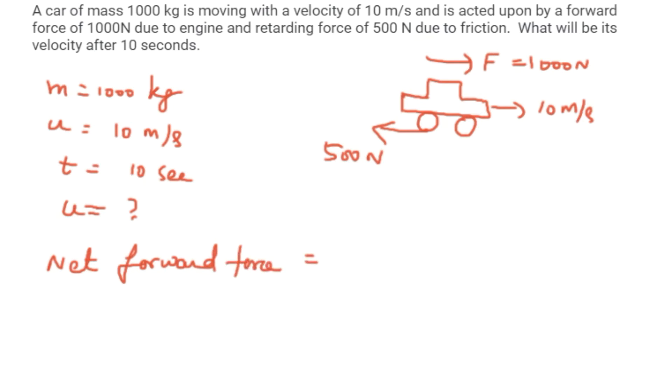Net forward force is equal to forward force minus retarding force. That is equal to 1000 minus 500, which equals 500 N. So this is the net forward force that is acting on the system.